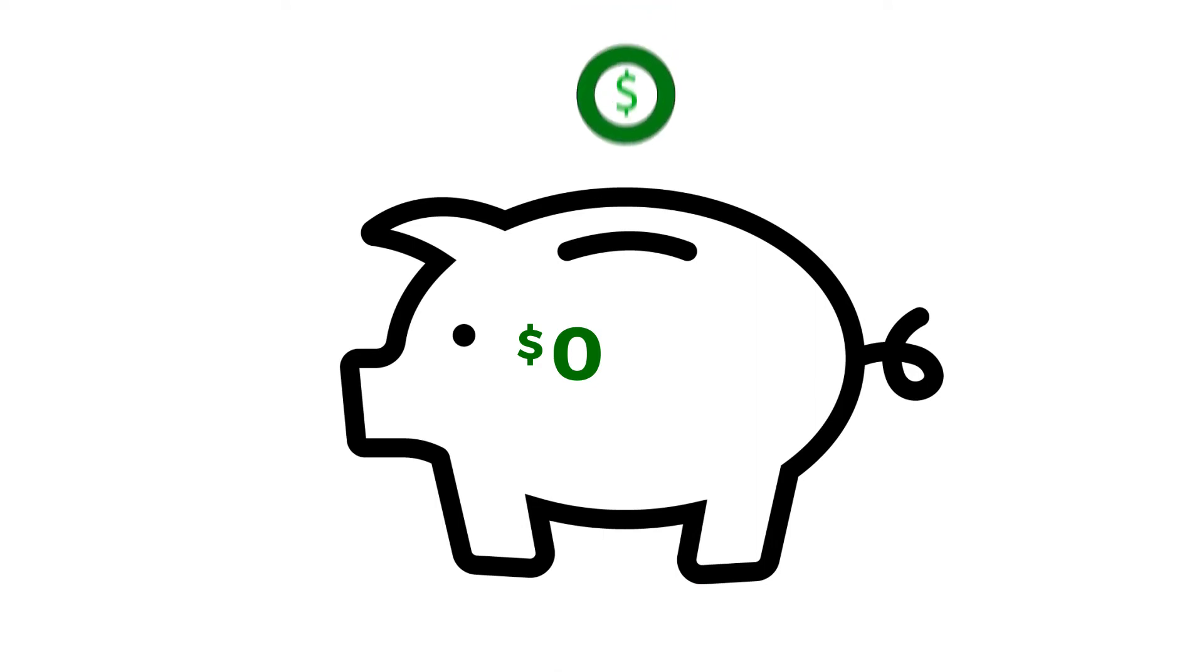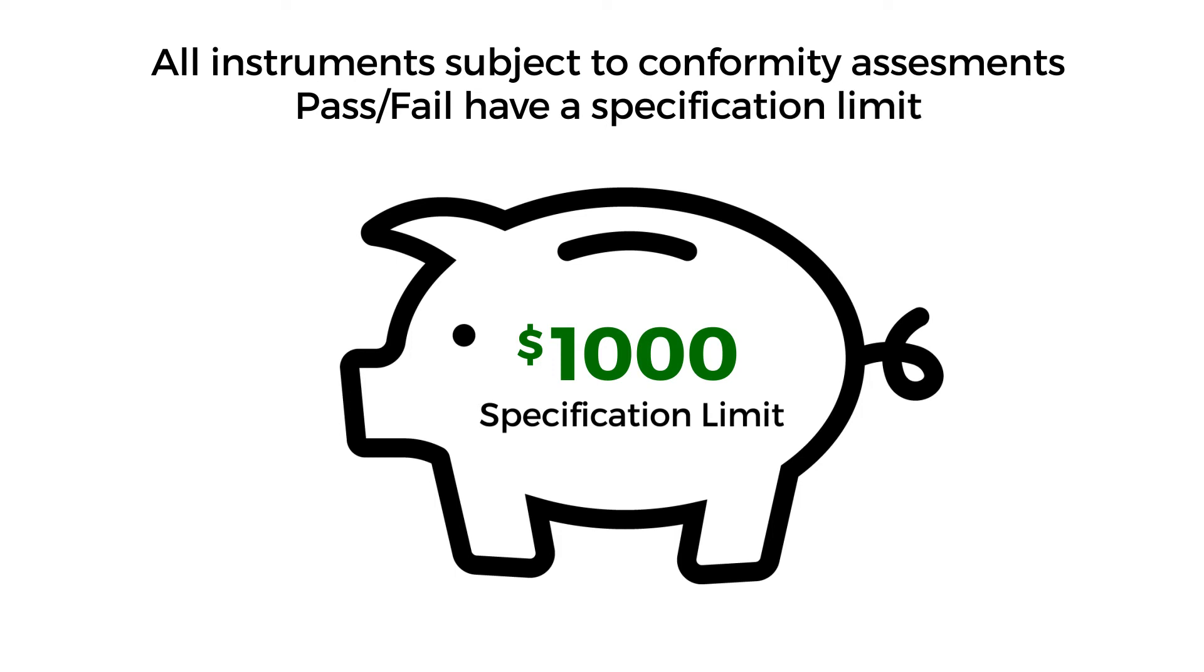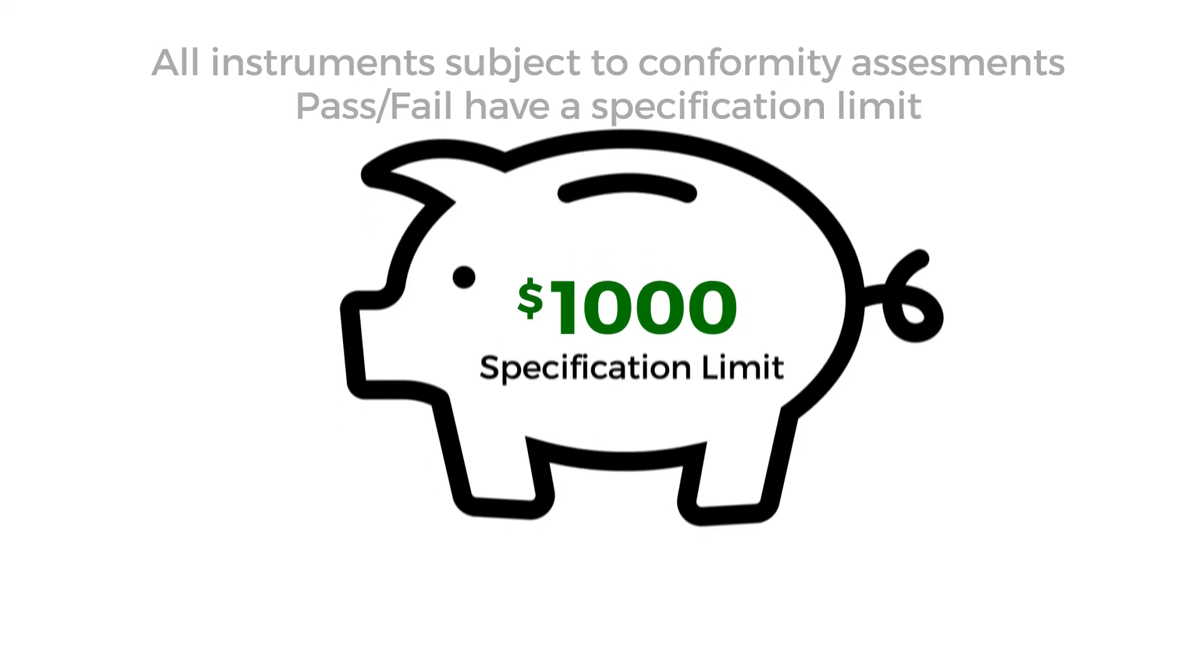Think about the measurement uncertainty in terms of a household budget. The income in your household budget is the specification limits. All instruments subject to conformity assessments pass-fail have a specification limit.